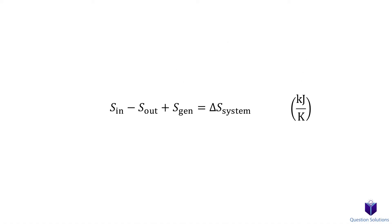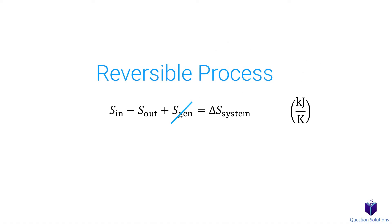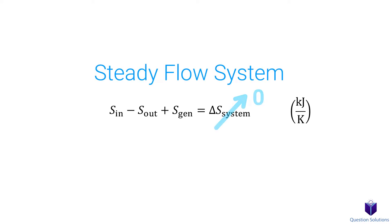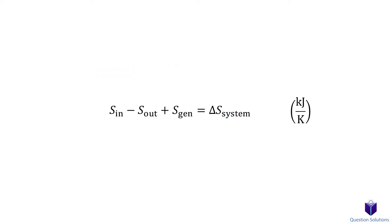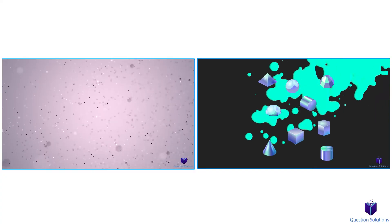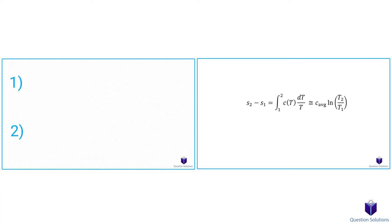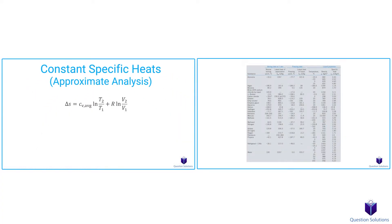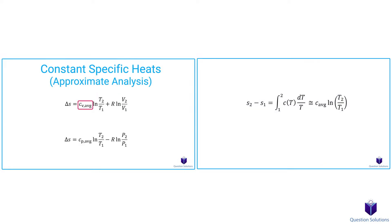Keep in mind that if the process is reversible, then there is no entropy generated, so that term gets eliminated. Also, if our system is a steady flow system, then the change in entropy for the whole system becomes zero. Most of the time when solving problems, your goal is to figure out the entropy generated during a process. You will need to remember how to find entropy for ideal gases, incompressible substances, and more, so watch those videos before heading into entropy balance problems.